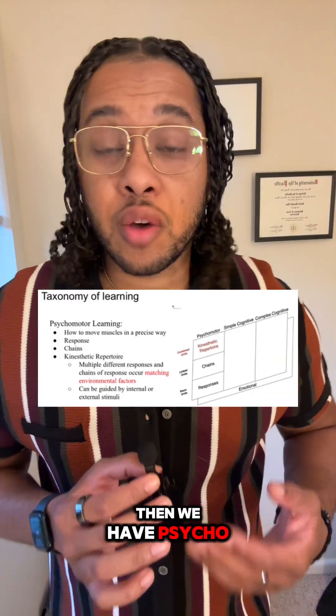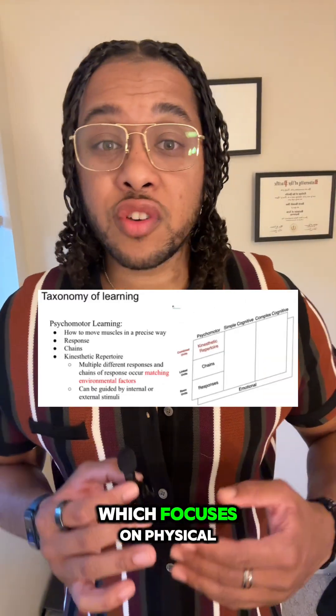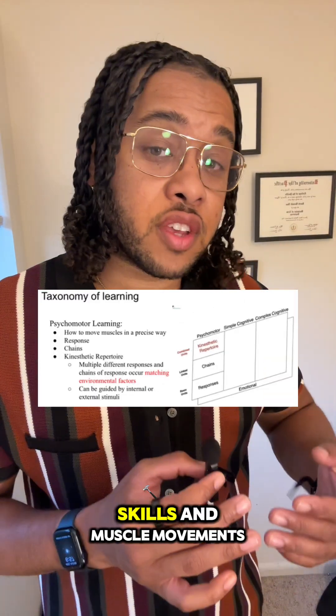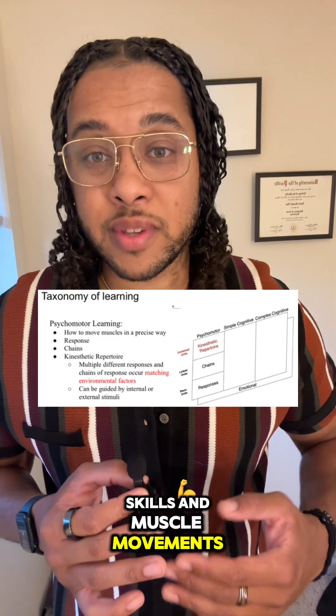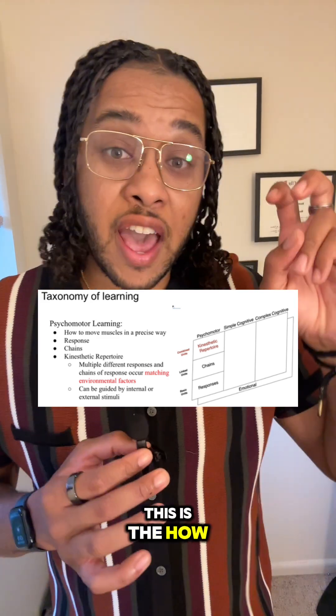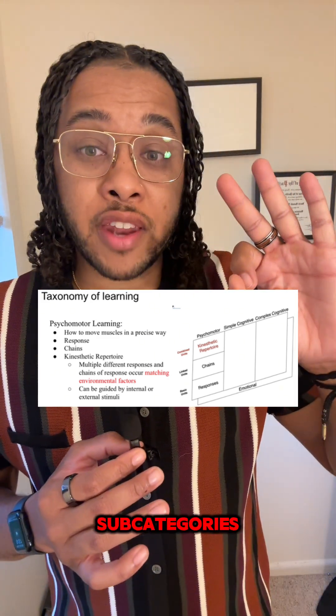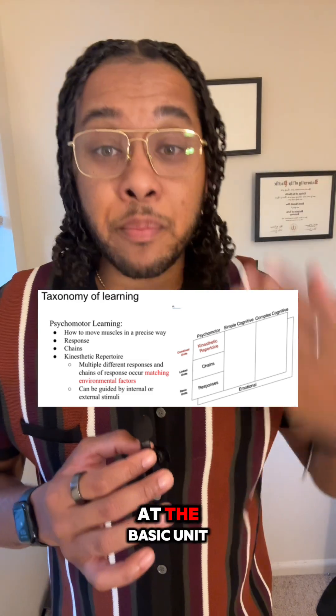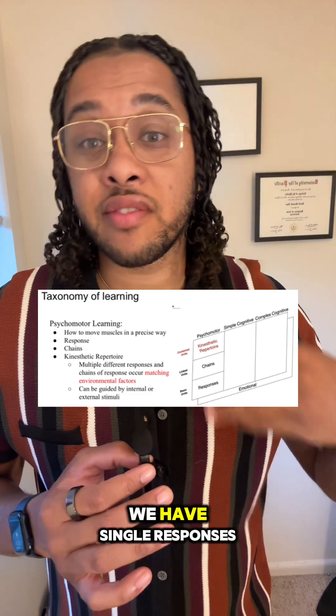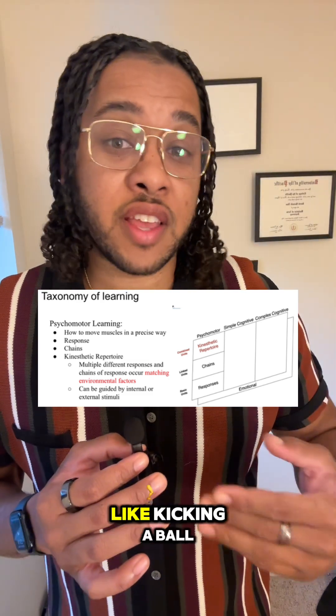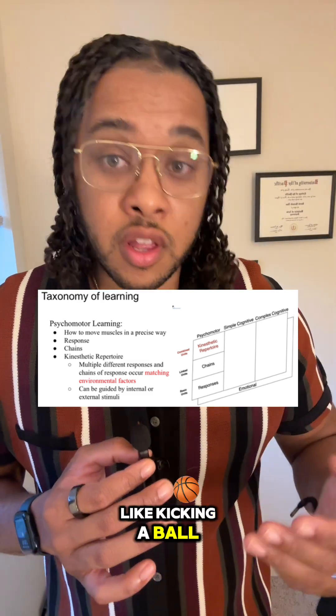Psychomotor learning focuses on physical skills and muscle movements — this is the how-to part of the taxonomy. It has three subcategories. At the basic unit, we have single responses, like kicking a ball.